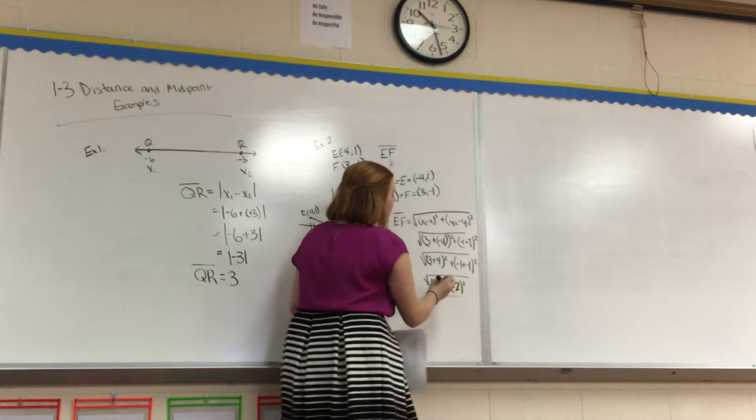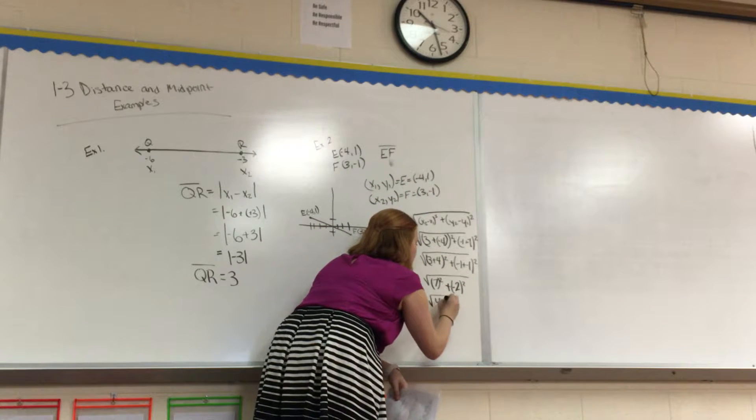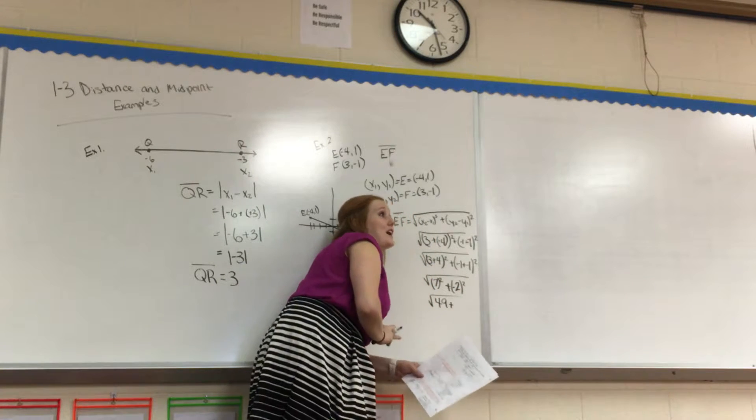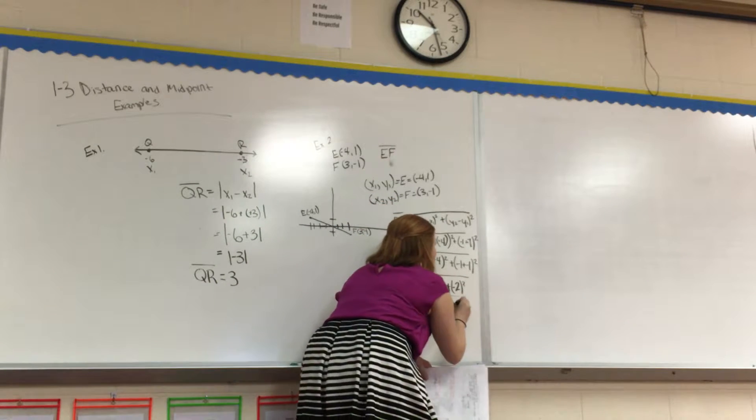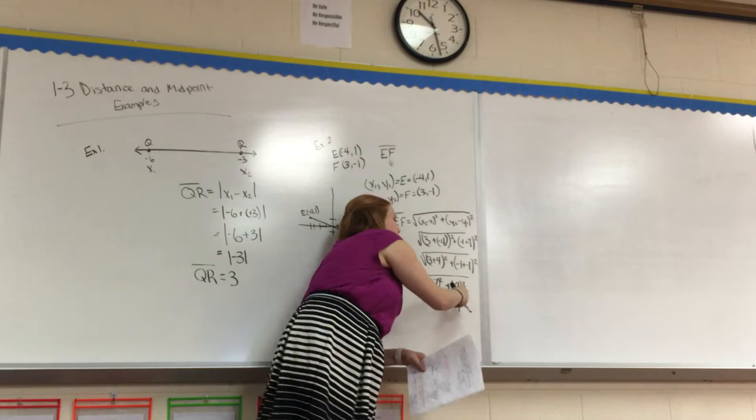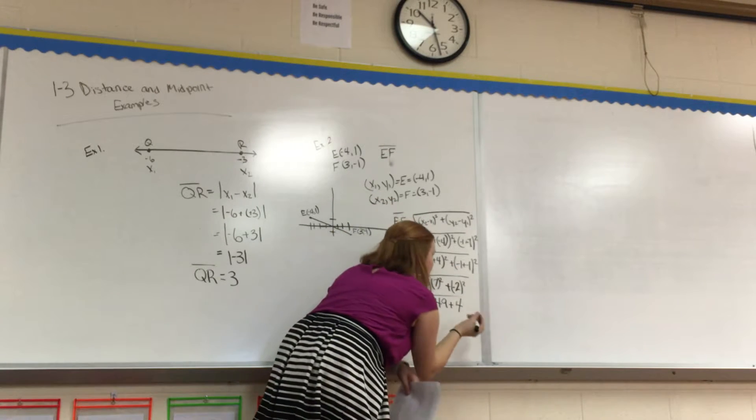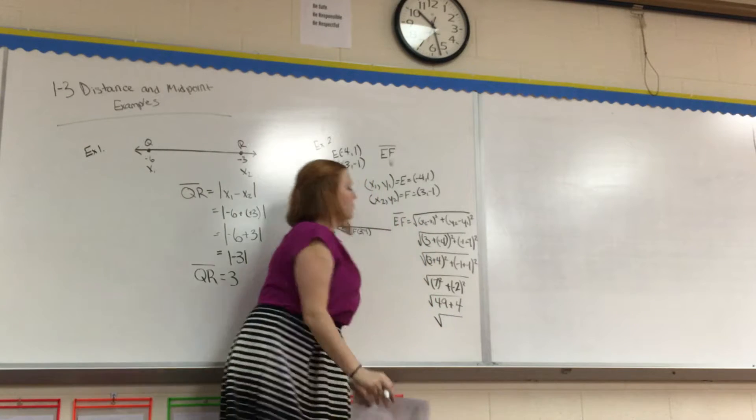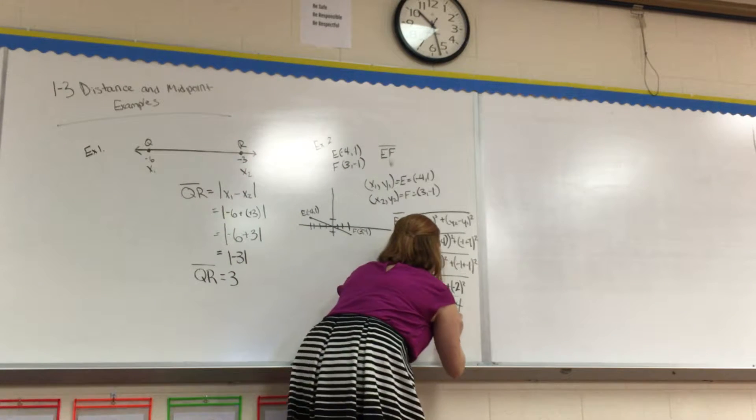So what do we get? We get 7 squared, which is 49, plus what's negative 2 squared? It's not negative 4, it is 4. Yes, 4. Whenever you square it, it turns positive. 2 times 2 negatives is a positive. What's 49 plus 4? 53.